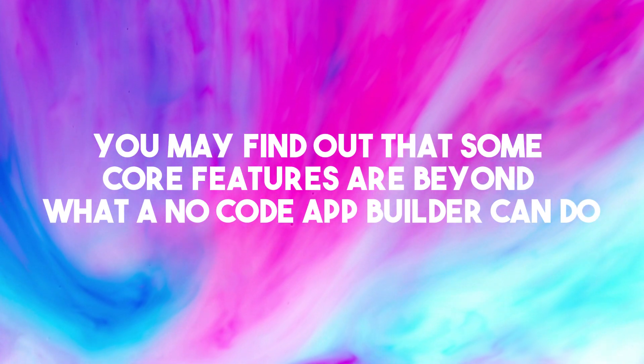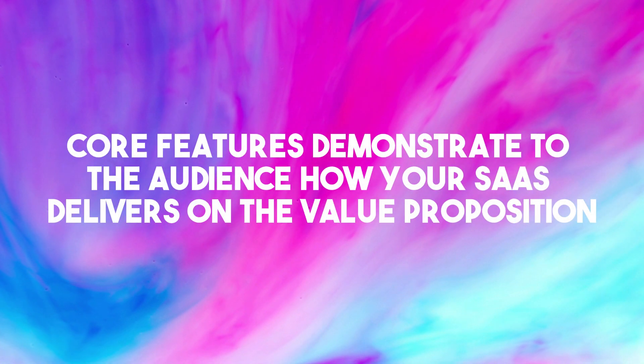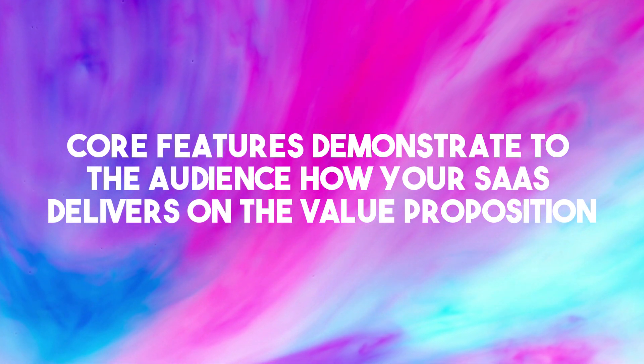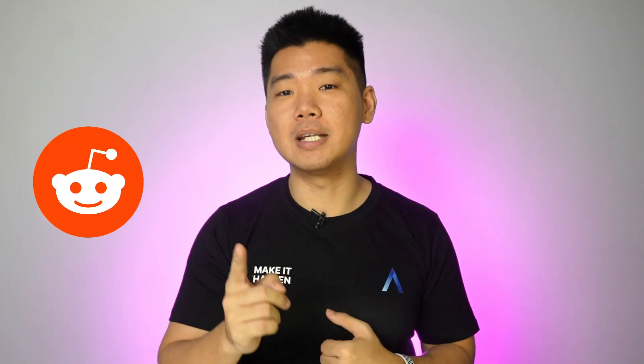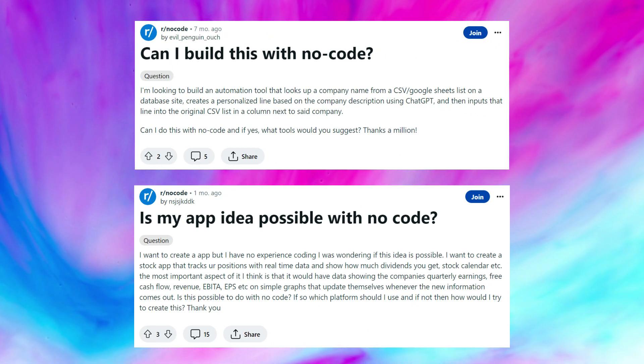Once you understand the value proposition of your solution, it's time to map out core features. The value proposition is what your SaaS does for users; core features are what your SaaS needs to do it. This is important for two reasons: one, you may find out that some core features are beyond what a no-code app builder can do; two, core features demonstrate to your audience how your SaaS delivers on the value proposition. Even the best no-code app builders have their limitations — and if you can't build it, never fall in love with ideas. To check feasibility, I ask the no-code subreddit. If they give the green light, it's time to test the waters.